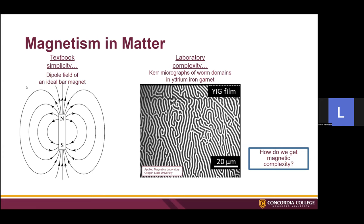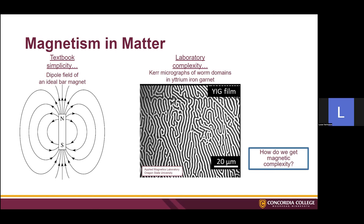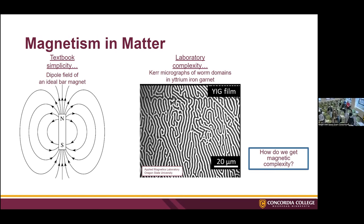Most people are familiar with the textbook example of a magnetic dipole and the field created by that, but in materials you can get a lot more complicated magnetic domains, such as seen in a thin film of Yttrium Iron Garnet. The reason you might want to study these domain patterns is that they have applications in memory and storage in computers. These domains are formed due to a strong magnetic field perpendicular to the thin sample, and our team is hoping to observe similar effects by creating a strong magnetic field and moving it around a sample to see how the domains within that sample change.